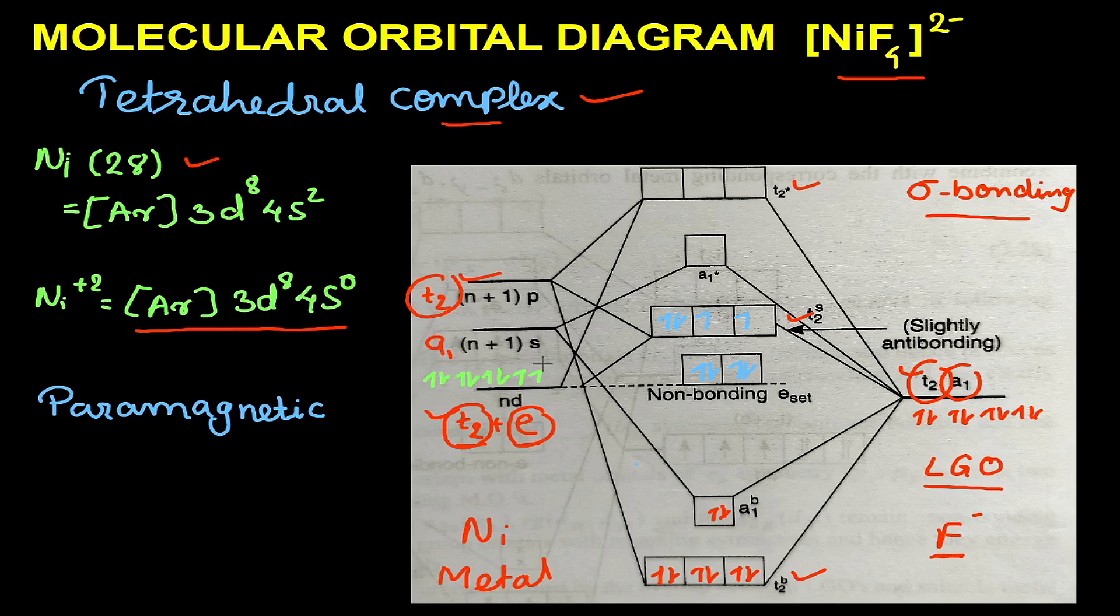The difference between the non-bonding and slightly antibonding orbitals is the crystal field stabilization energy. The electrons will be filled according to Hund's rule of maximum multiplicity.